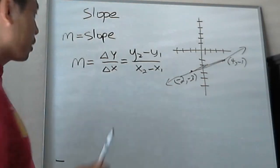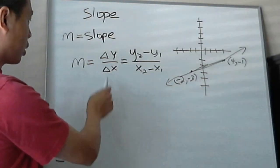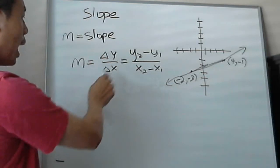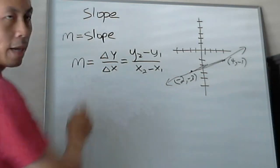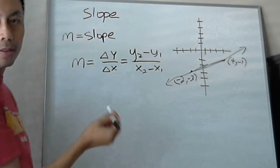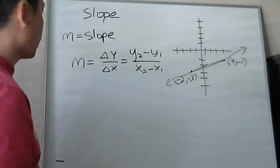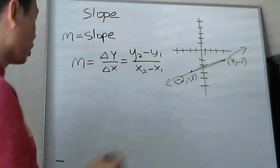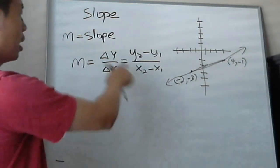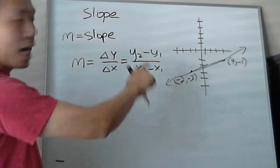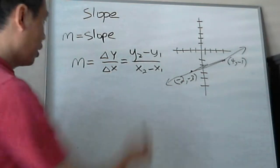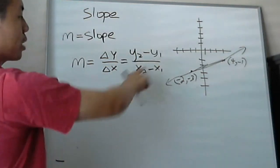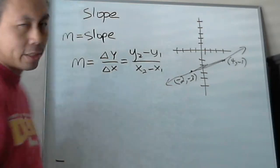So the way you find slope is there's a formula to it, which is delta Y over delta X. Delta, you'll notice in a lot of science or anything, this Greek letter means change. So it's the change in Y over the change in X. So it equals Y2 minus Y1 over X2 minus X1.